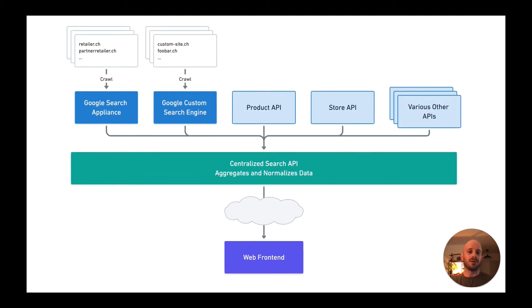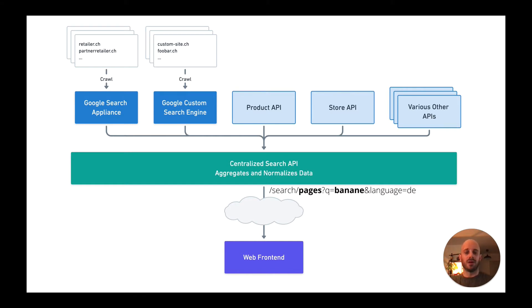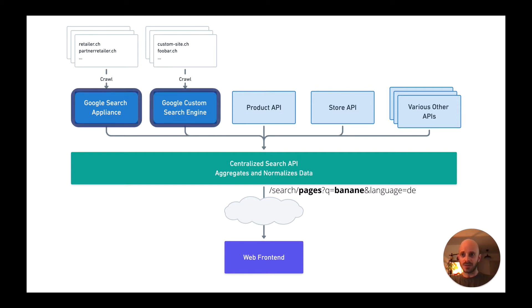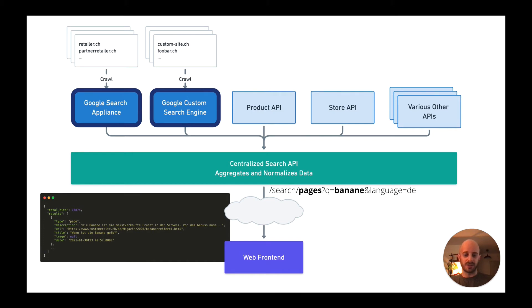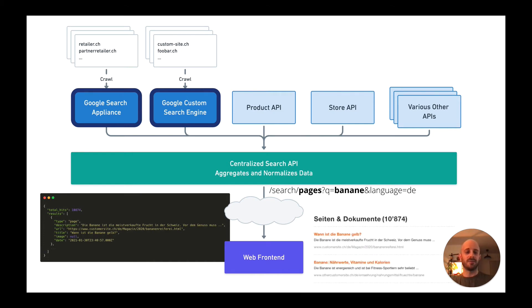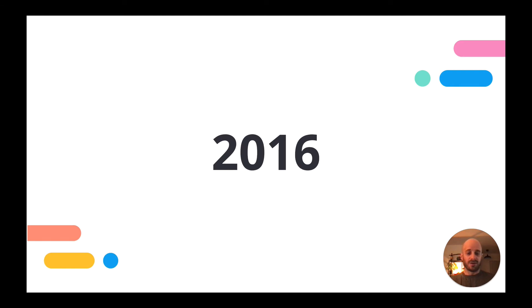In the year 2014, one of our biggest customers bought some of these boxes and put them into a solution which looked a little bit like this: a centralized search API and Google Search Appliance. The GSA was crawling different company websites, and if a user searched for pages with the term 'Banane' — which is the German word for banana — it would go to the Google Search Appliance and get back search results matching that term, which were then displayed in the front end.